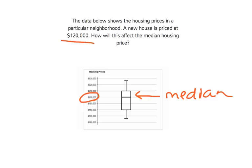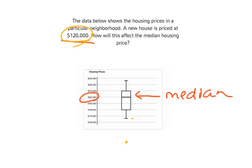$120,000 would be the lowest point we have here — the minimum so far is about $165,000. So $120,000 is going to be way down here somewhere. That's $120,000.